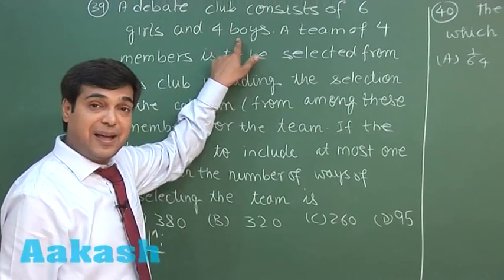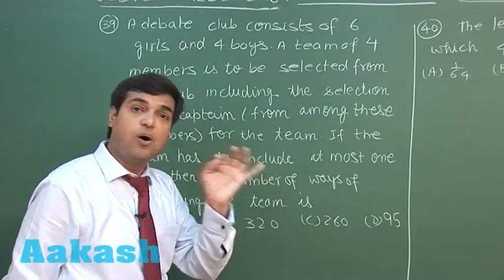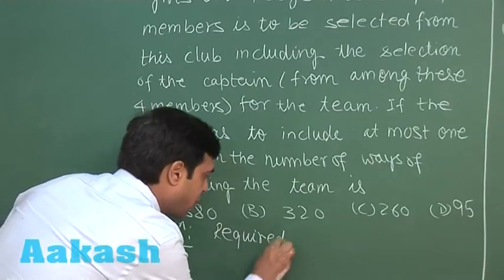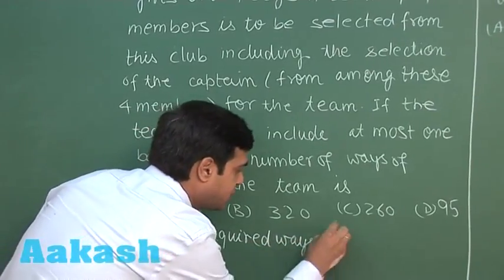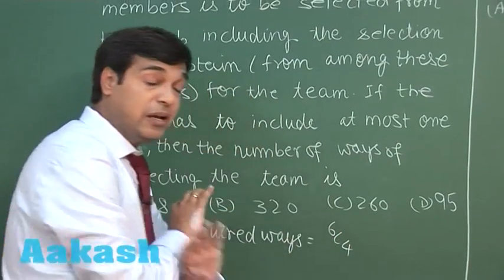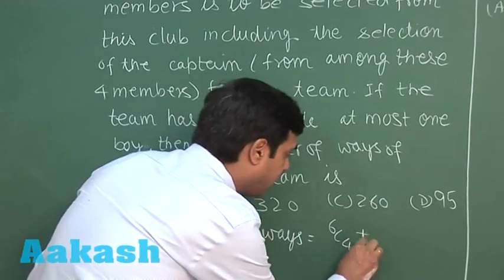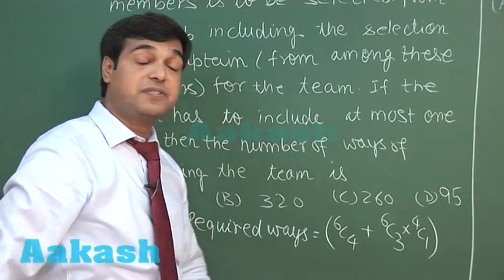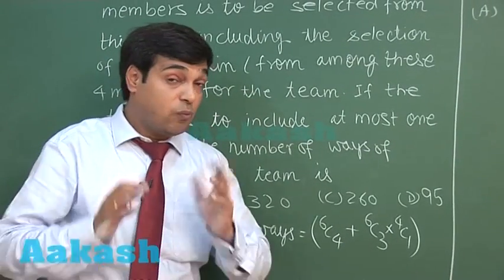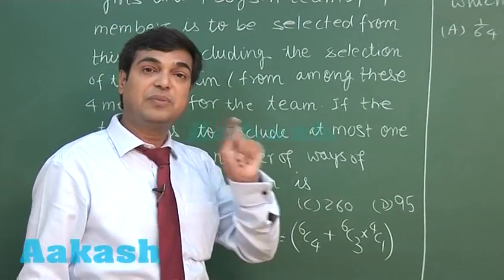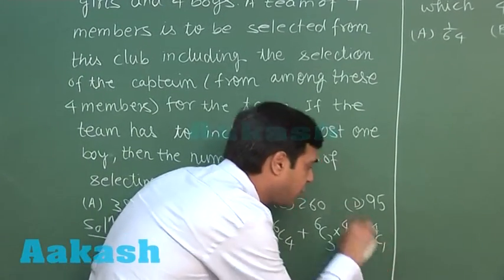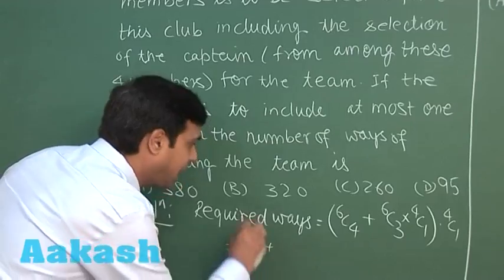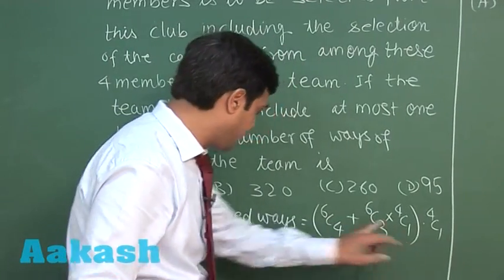We have six girls and four boys. At most one boy means either no boy or just one boy. So required ways equals 6C4 (no boy selected) or 6C3 × 4C1 (three girls and one boy selected). Once we've selected four members, we must also select a captain from these four, so we multiply by 4C1. Simplifying: 6C4 = 15, and 6C3 × 4C1 = 20 × 4 = 80.